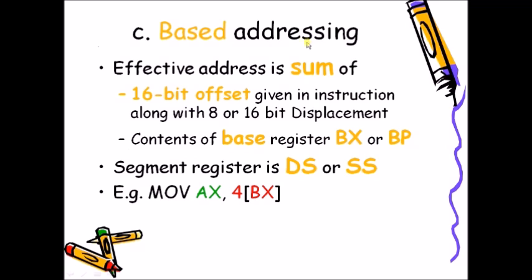In based addressing mode, the effective address is obtained by adding the contents of a base register (BX or BP) along with a displacement, which may be an 8-bit or 16-bit value. The segment register is DS or SS. For example, in 'MOV AX, 4[BX]', the contents of BX are added with displacement 4, and whatever is at that resultant address is copied into the AX register.